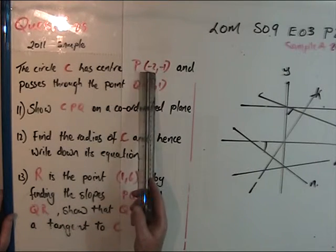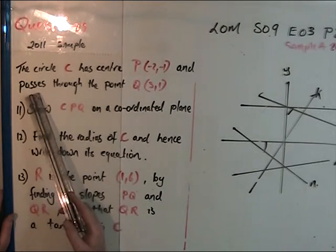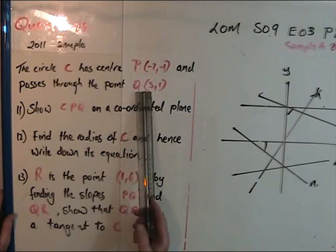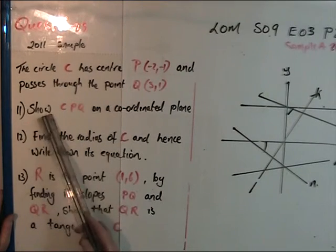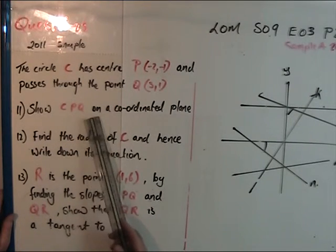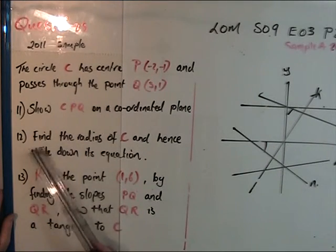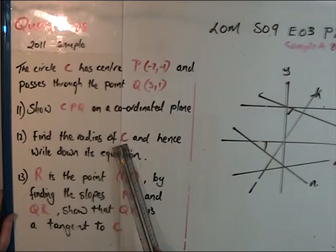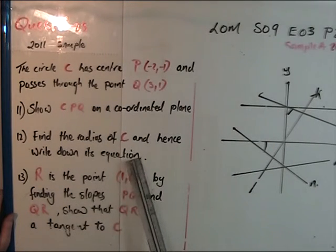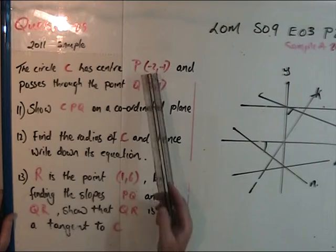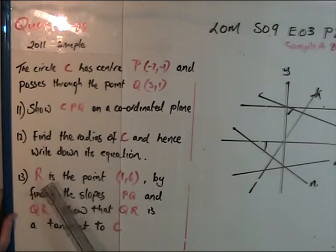The circle C has center P(-2,-1) and passes through point Q(3,1). Show CPQ on a coordinate plane, find the radius of circle C, and write down its equation.